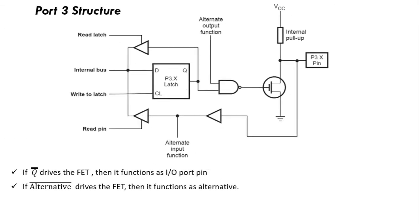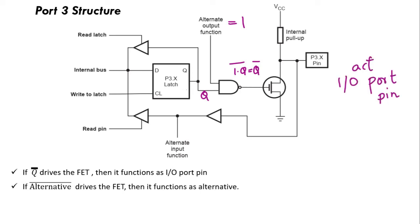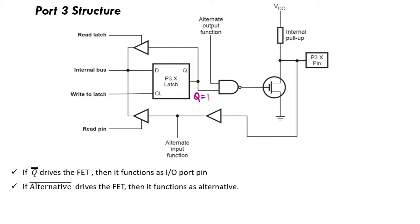Now, the port 3 structure has a small difference. There is one alternative output function, one NAN gate, one buffer, and one alternative input function. Assume the alternative output function equals 1 and Q is the input to the NAN gate. The output will be 1 NAND Q bar, which equals Q bar. So Q bar drives the FET and it acts as an input-output pin. Now assume the value stored in the latch is 1. Let A be the alternative output function. Then the output of the NAN gate will be 1 NAND A bar, which equals A bar. A bar drives the FET, so it functions as an alternative function.